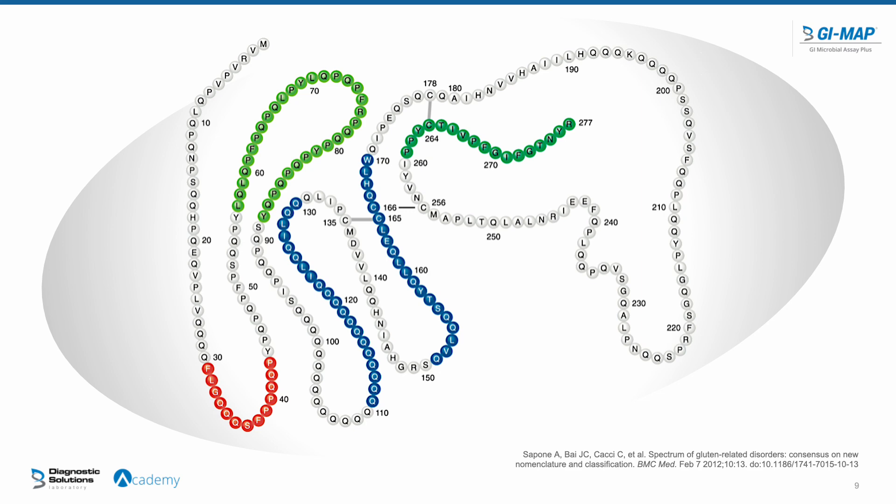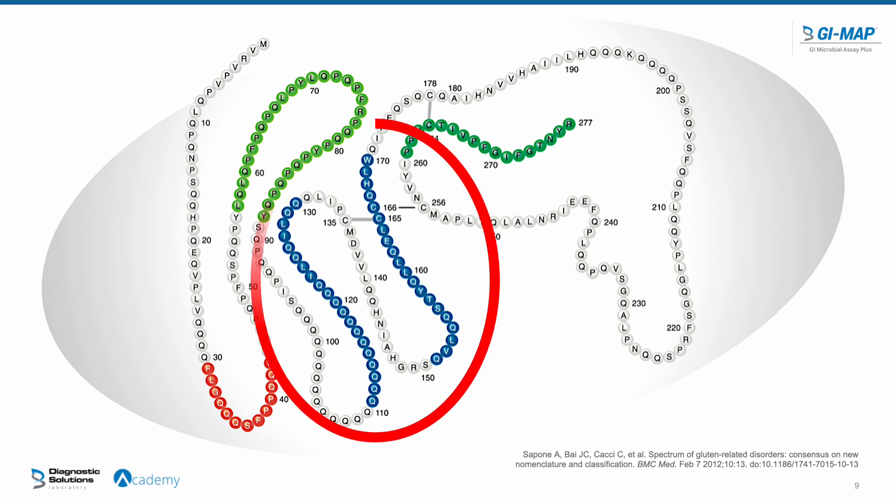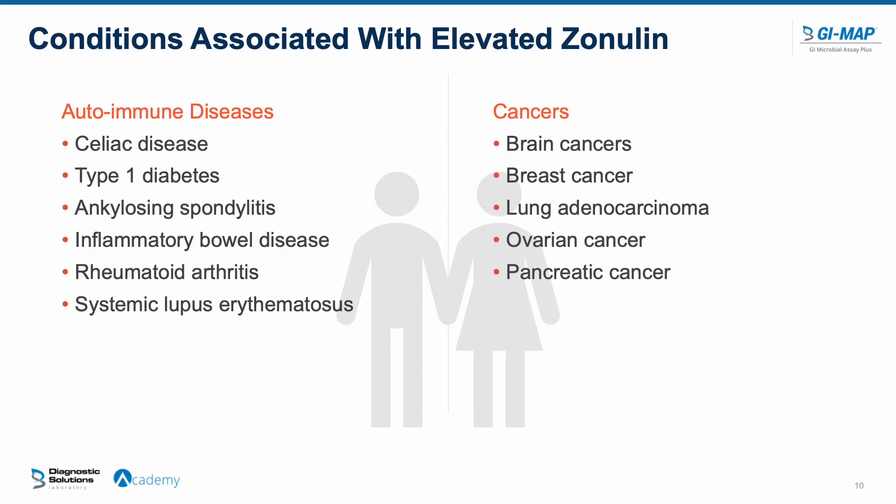Gluten consumption has a big impact on zonulin release. Gliadin is one of the breakdown proteins from gluten — gluten breaks down into glutenin and gliadin. The two highlighted regions of the gliadin protein are responsible for zonulin release and gut permeability. So for anybody eating gluten, these proteins can bind and cause that zonulin release.